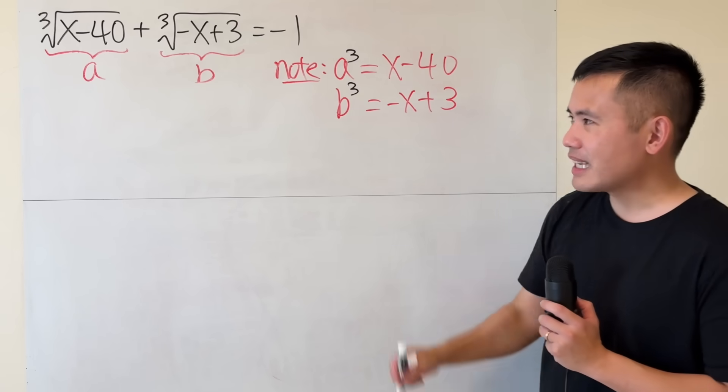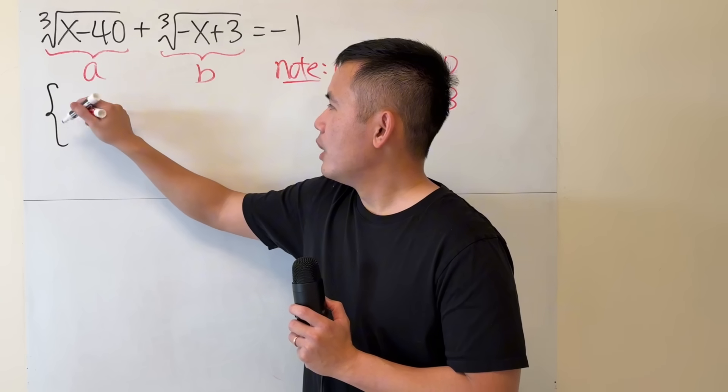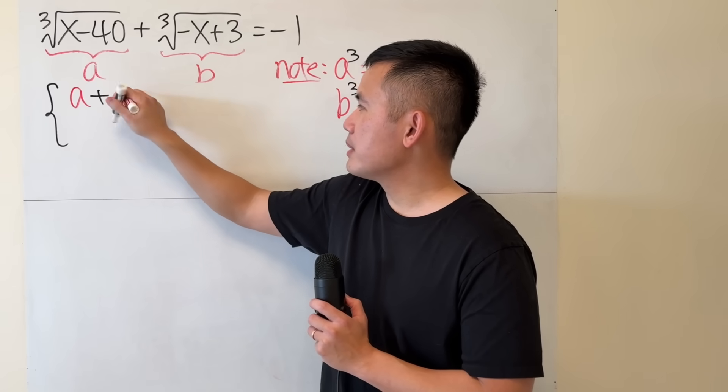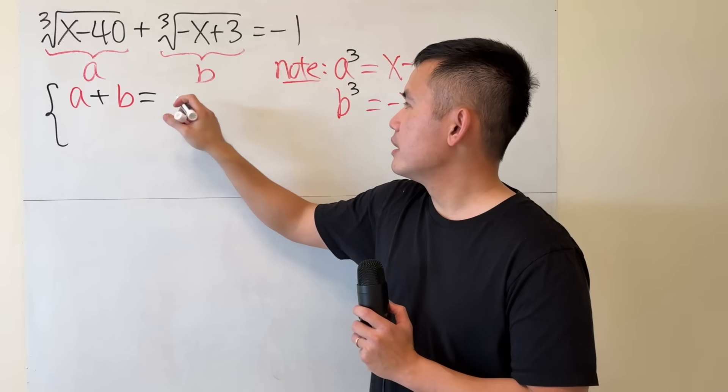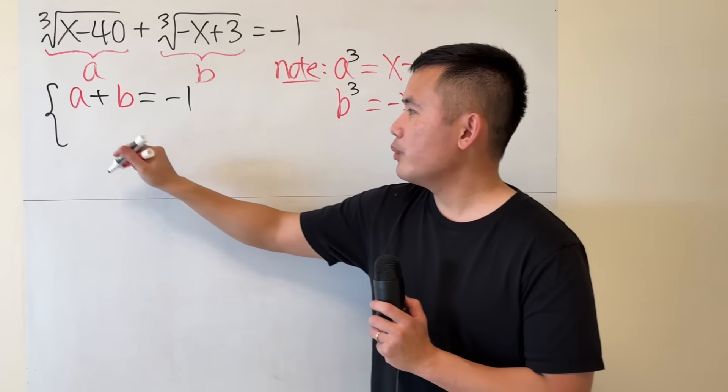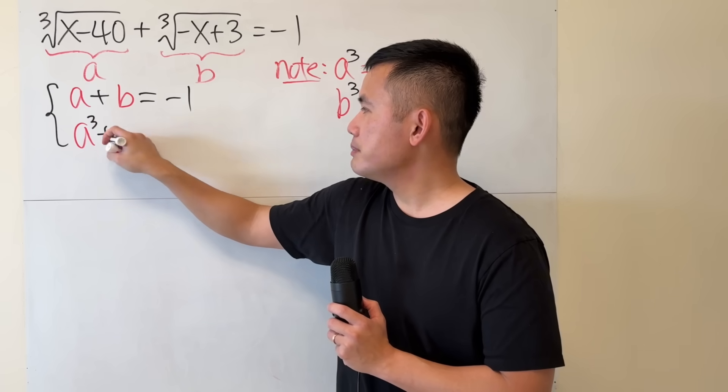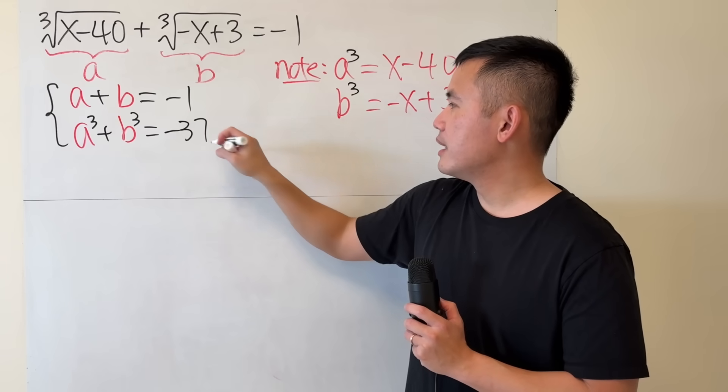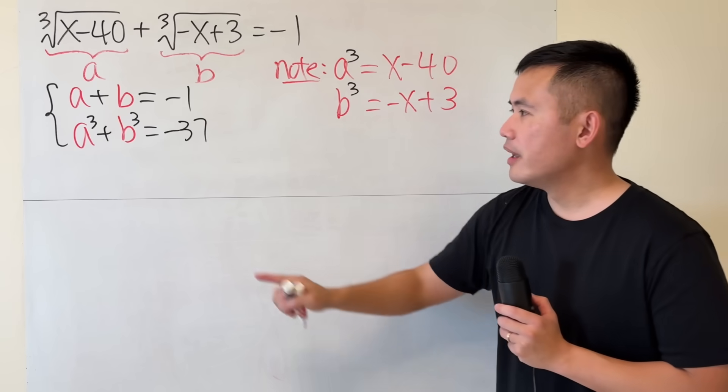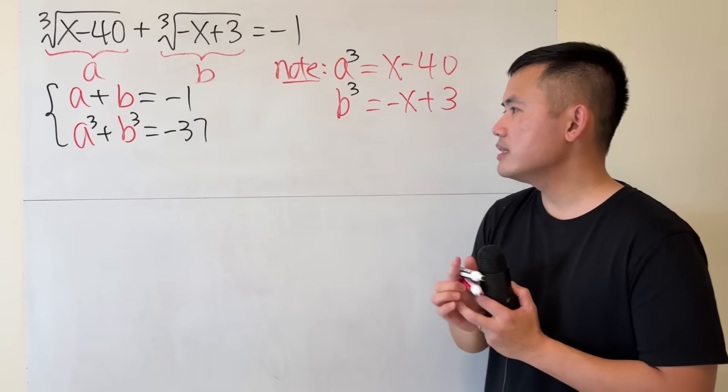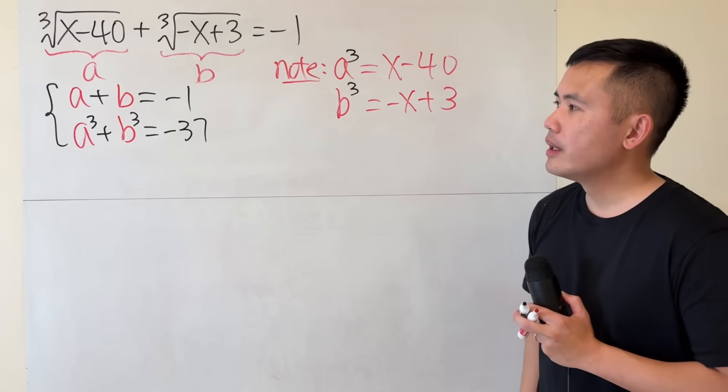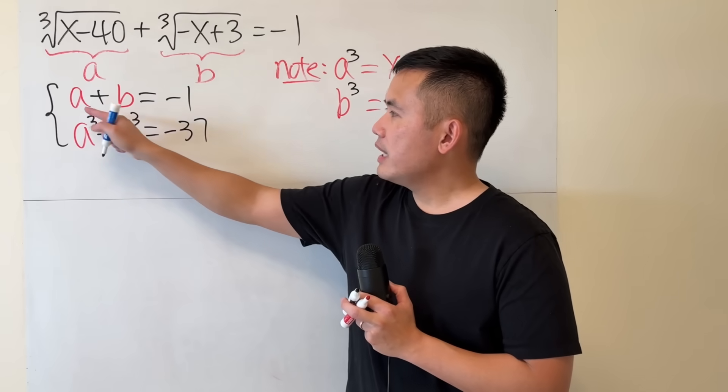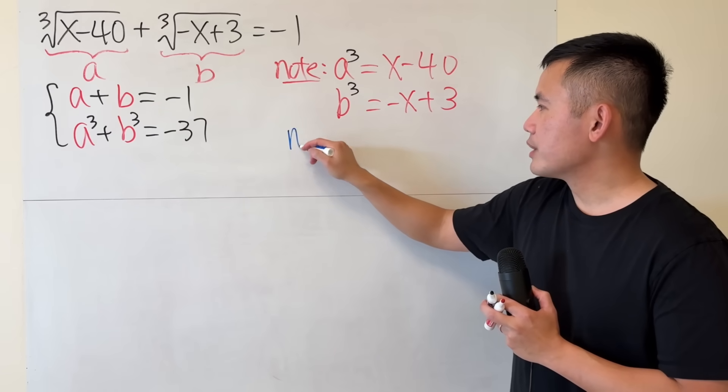But does that really help? Well, let's have a look. Right here, originally, it's just a plus b equaling negative 1. And now we have a cube plus b cube equaling negative 37. And here's a very nice identity that I would like to introduce you guys if you haven't seen that before. So here's another note.